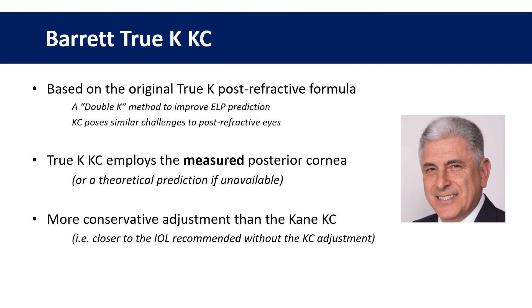Barrett's original idea was to use the measured posterior cornea and input this into the standard Barrett Universal formula, but he's now evolved this and generated a new algorithm more akin to his post-refractive TRU-K formula. This makes sense, given that one of the major problems with keratoconic calculations is the loss of the normal relationship between the anterior and posterior cornea — the same problem that faces us after previous corneal refractive surgery. It makes use of a double-K method, whereby the measured K is used to calculate the IOL power and the theoretical K is used to predict the effective lens position — a well-known method in post-refractive IOL formulae.